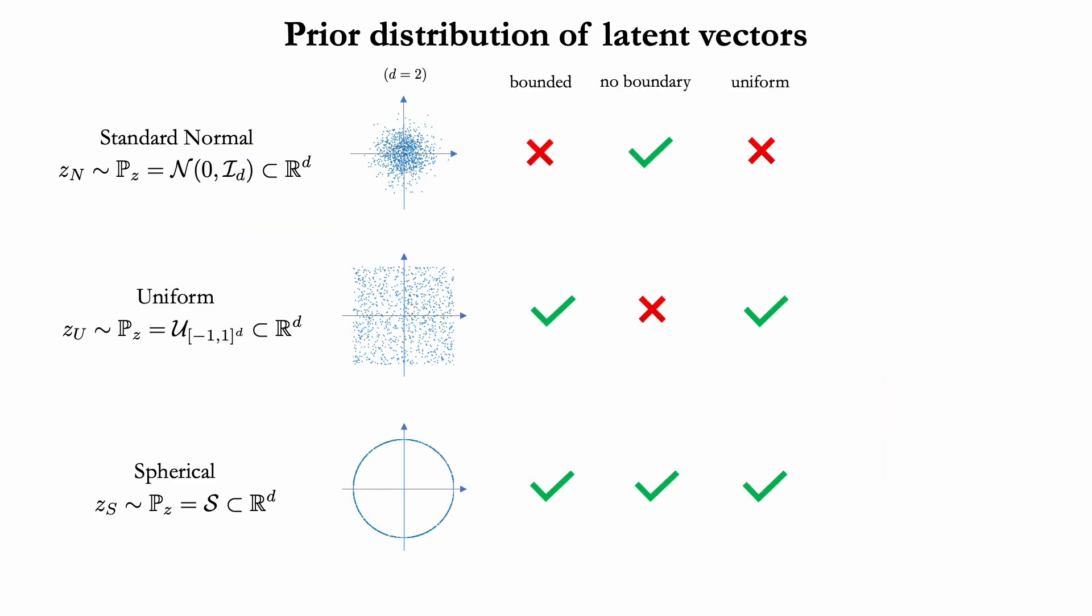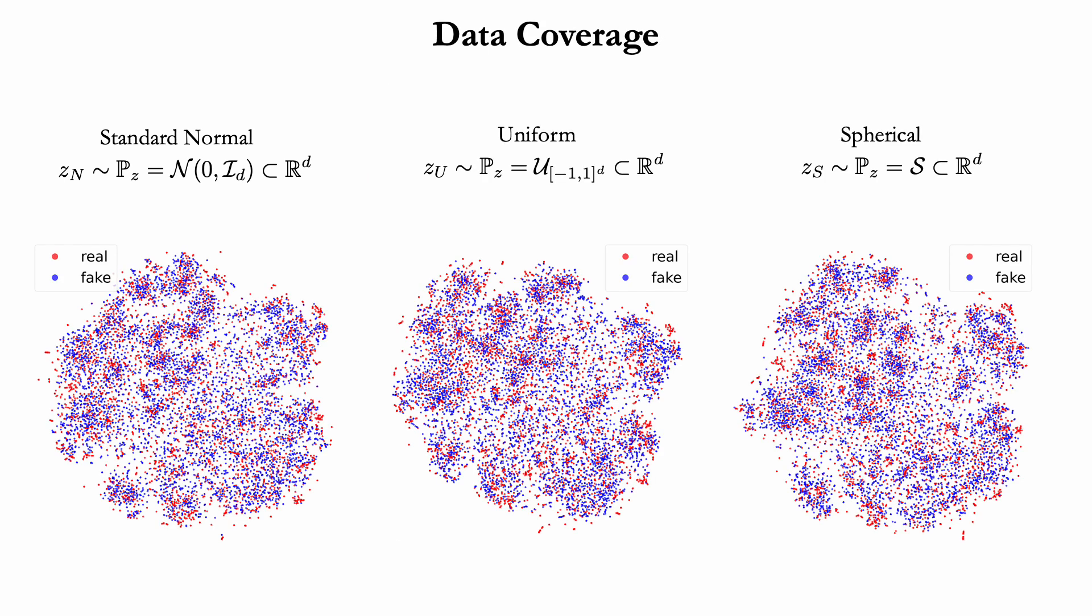We tried three different distributions for a latent prior: normal, uniform within a box, and uniform on a sphere. As these priors can potentially influence the distribution of output poses, we trained three separate models. In practice, we did not observe great differences in terms of coverage between these three variants of our approach.